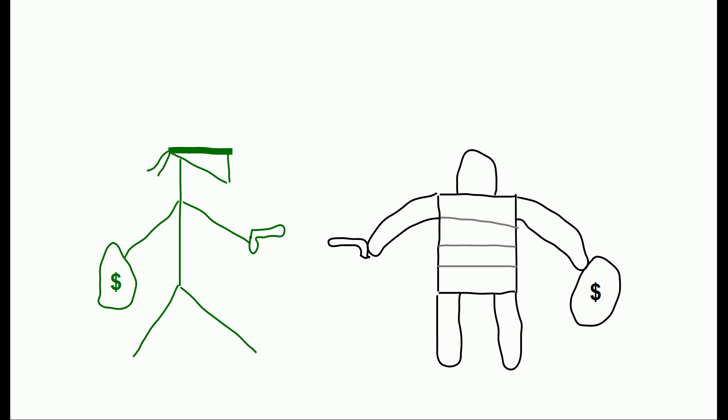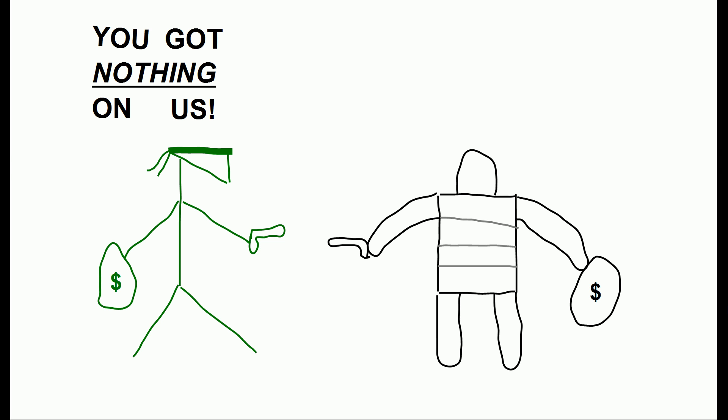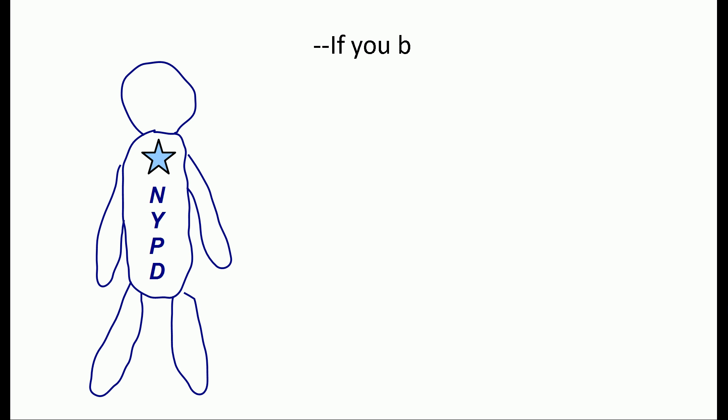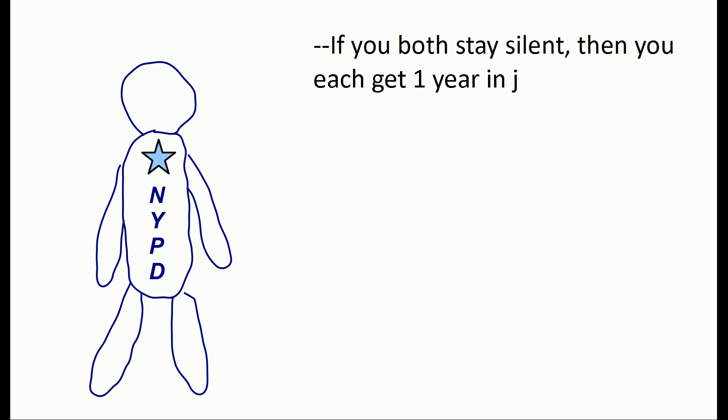You and your partner in crime are apprehended, but you're not too worried because the police don't have much evidence on you. A clever cop tries to come up with a way to get you to talk. He explains that if both of you stay silent, then each of you will serve one year in jail.